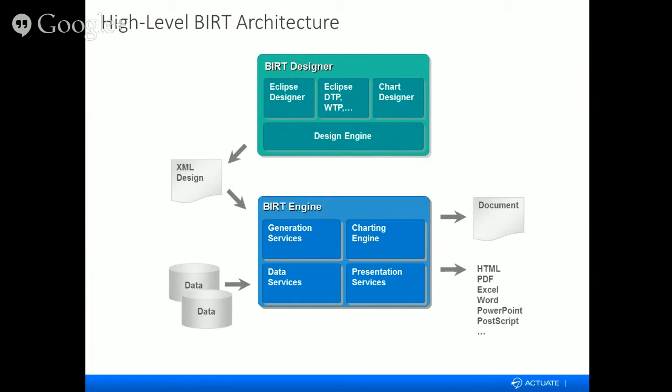The design file is lightweight by design — all it does is describe what your report is supposed to look like when rendered. It won't contain any data, but it will contain the connection details for your data sources, such as username and password to a SQL database plus the query you'd like to execute. The BIRT engine looks at that design file, interprets how you want the report to render, connects to your data sources, brings that data in, and renders the report — either out to a document for later use or directly to a format like HTML.